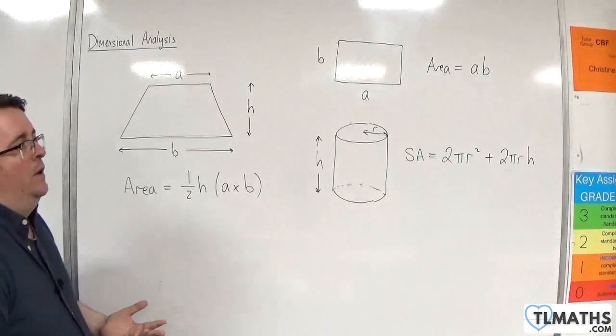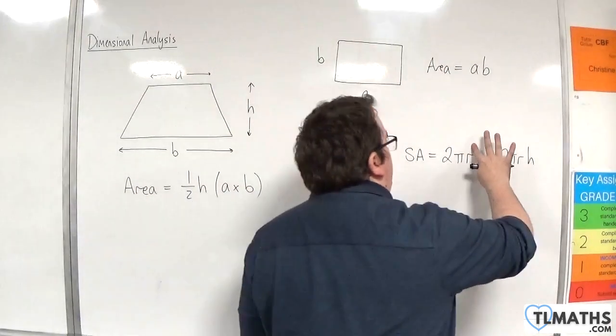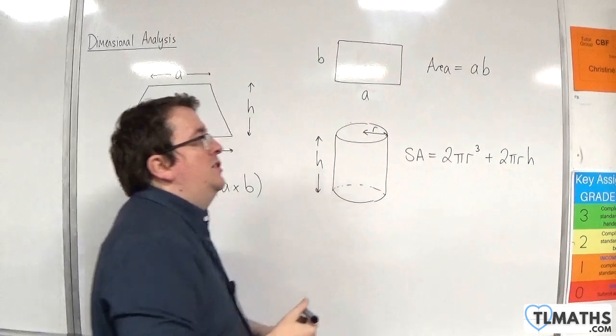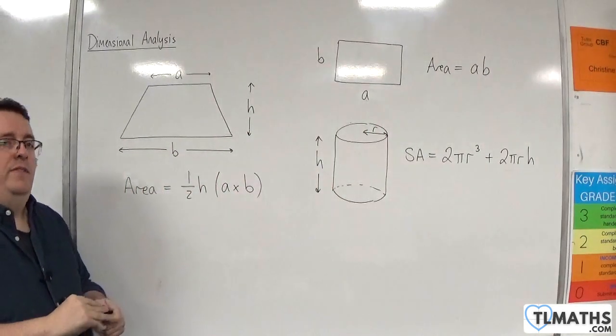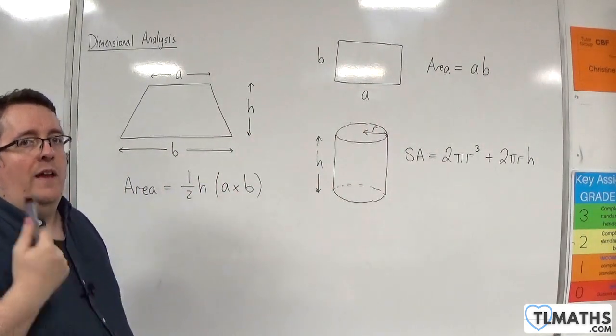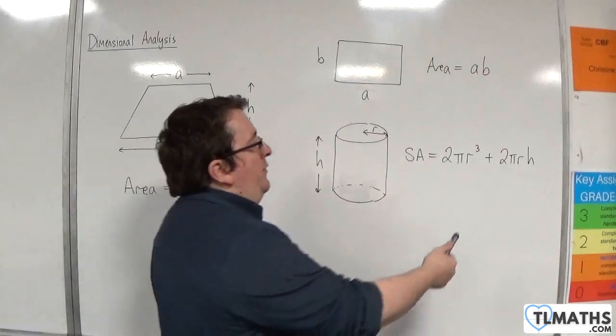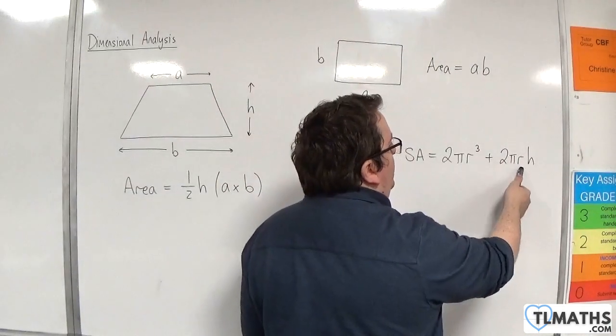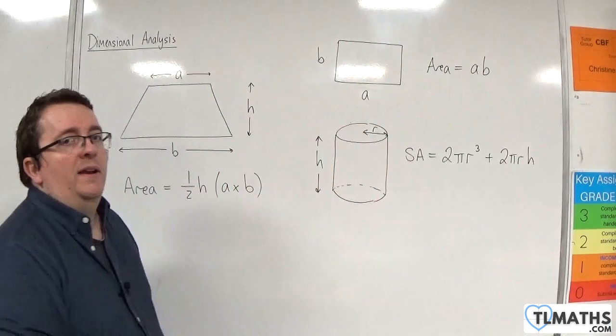So if this had been written down as 2πr³ plus 2πrh, then we would instinctively know that that is wrong. Because this would be a volume, that's an area. We can't add a volume and an area together.